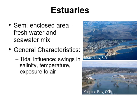Some general characteristics we find in estuaries include a big amount of tidal influence. Just as tides can have a big effect in rocky intertidal areas, they can in estuaries as well. In estuaries you find big swings in salinity, big swings in water temperature, and big swings in terms of exposure to air versus water on a daily basis. A lot of estuaries also have soft sediment — when rivers transport lots of sediment from the land, you end up with muddy sea floors inside estuaries.